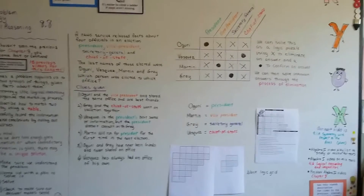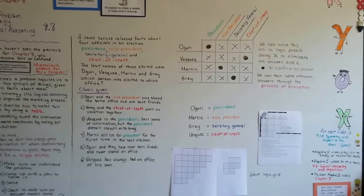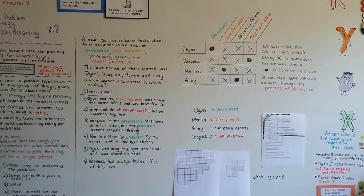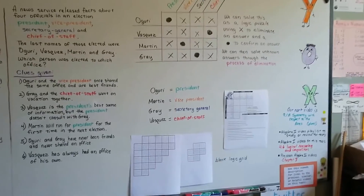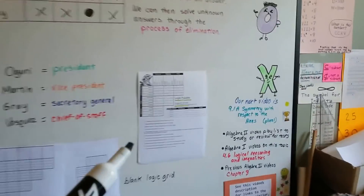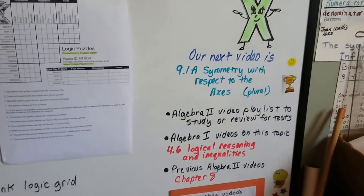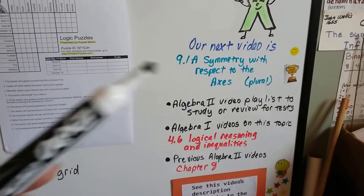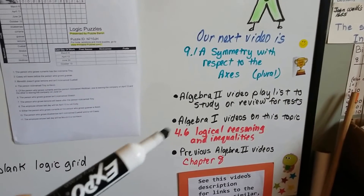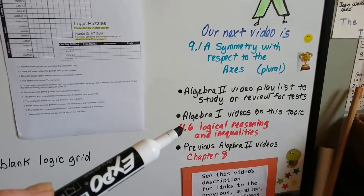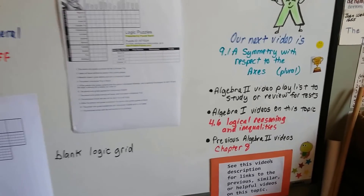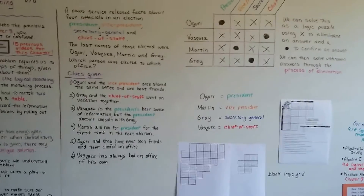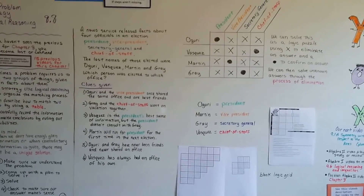We're going to move on to our next chapter — Chapter 9 — which is all about quadratic functions, and I hope I'll see you there. Our next video is 9.1a, and we're going to talk about symmetry with respect to axes. I'm going to add this to the Algebra 2 playlist. Back in Algebra 1, Chapter 4, section 4.6, we talked about logical reasoning and inequalities, and I'll have a link to any previous Chapter 8 videos that might help you. Have a great day — bye!